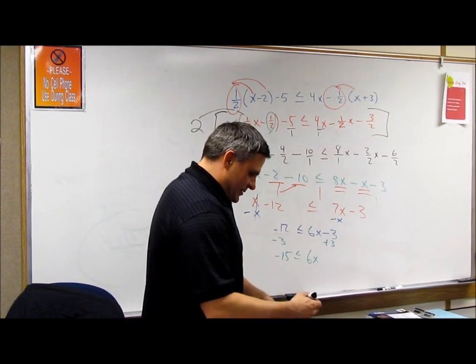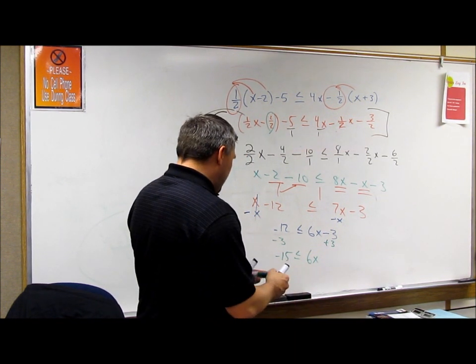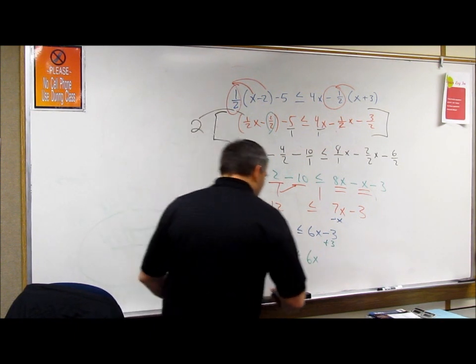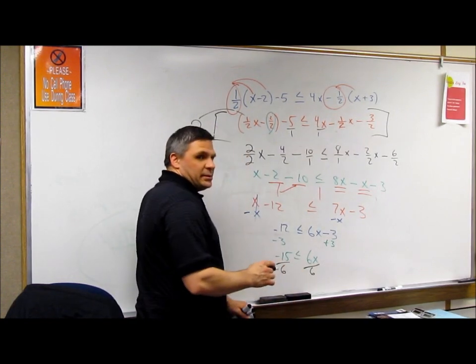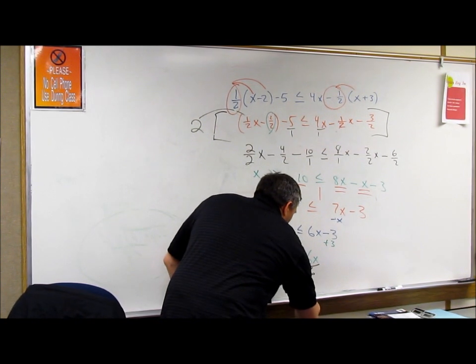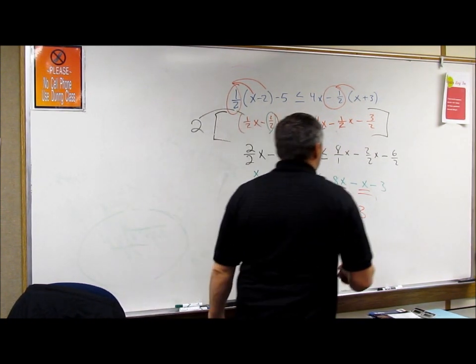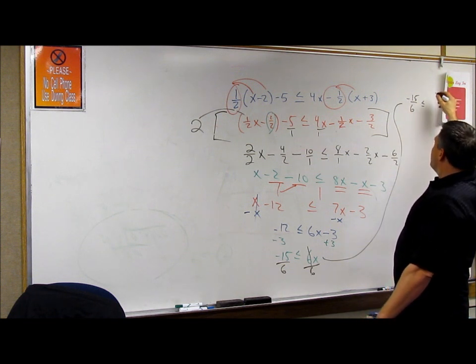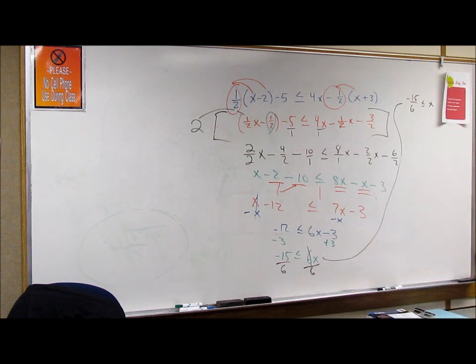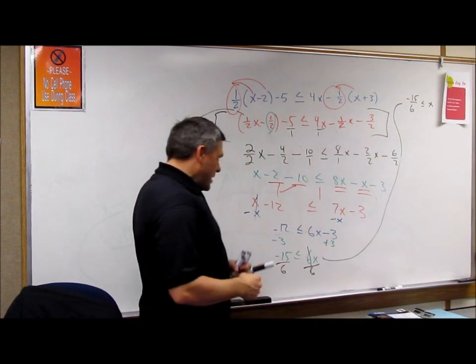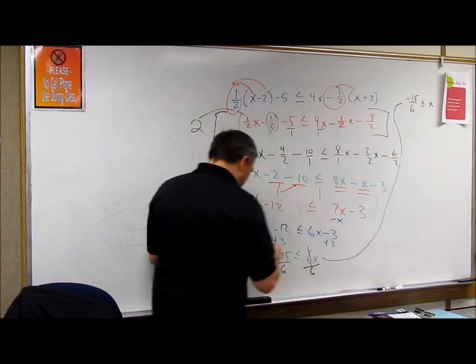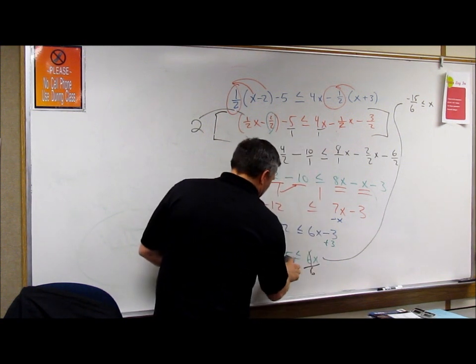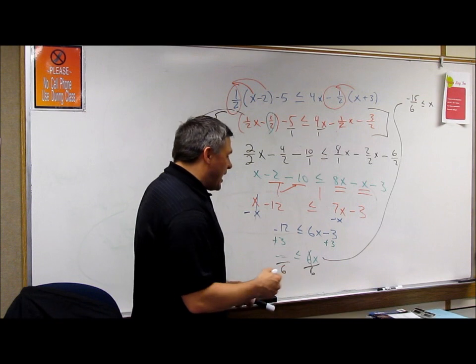Alright, so what do we do next? Divide by 6, divide by 6. So I get negative 15 over 6 is less than or equal to x. Now I'm pretty sure that's not one of the answers. I thought since you added the 3, you get rid of the 3. Ah, that's what I was wondering too. I knew I was doing something wrong there. I thought I was doing it wrong. Something looked wrong there. Thank you! I was so confused. So we added the 3, added the 3, and what happens?